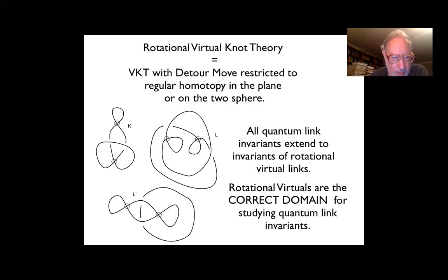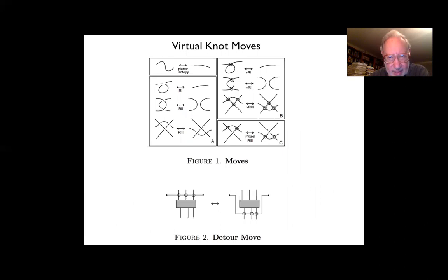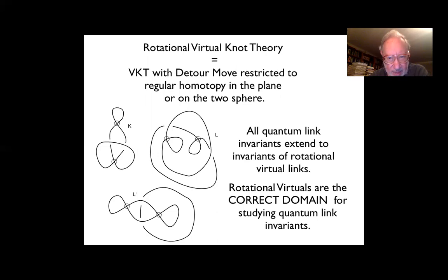The way to think about rotational virtual knot theory is that the detour move is now restricted to regular homotopy in the plane or on the two-sphere instead of just any replacement. Equivalently, you use the list of virtual moves but eliminate virtual R1 — you're allowed virtual R2, virtual R3, and the mixed move. All quantum link invariants extend to invariants of rotational virtual links, making rotationals the correct domain for studying quantum link invariants.